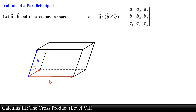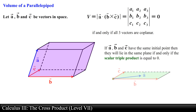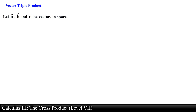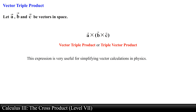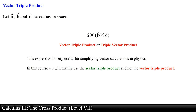A natural consequence of the scalar triple product is that the volume of the parallelepiped is zero if and only if all three vectors are coplanar. That is, if vectors A, B, and C have the same initial point, they will lie in the same plane if and only if the scalar triple product is equal to zero. The expression obtained by crossing vector A with the cross product of vector B and vector C is called the vector triple product. This expression is very useful for simplifying vector calculations in physics, but in this course we will mainly use the scalar triple product.